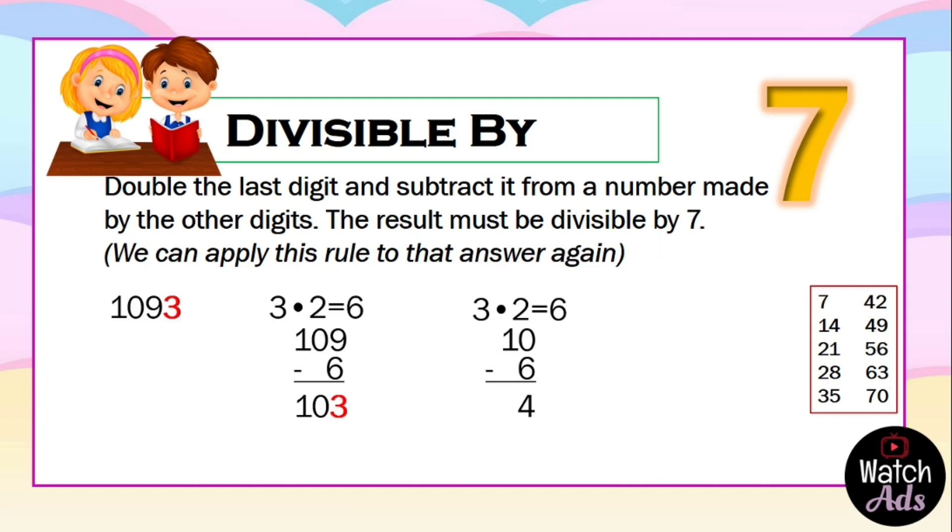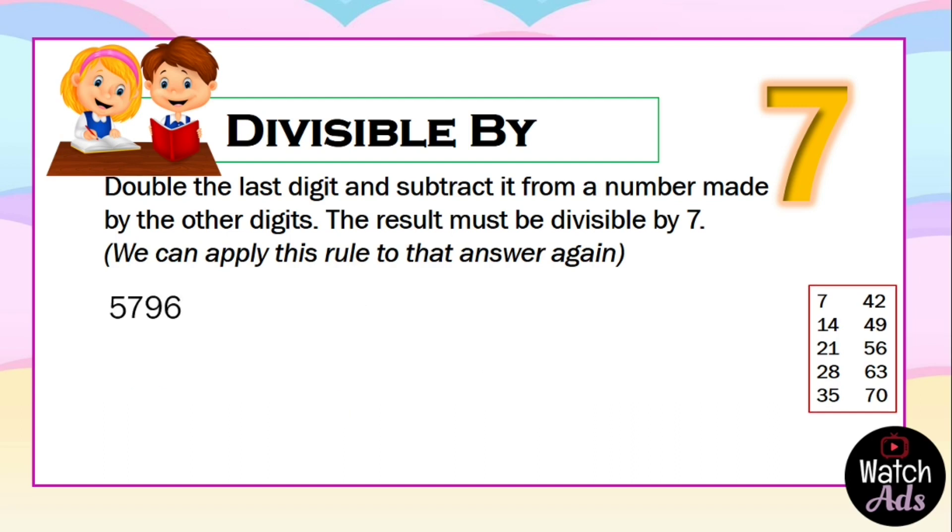Still, 4 is not divisible by 7, which means 1093 is not divisible by 7. Our last example is 5796.